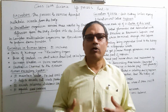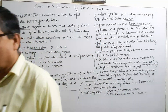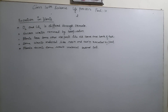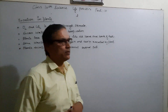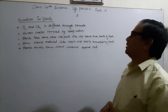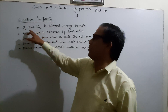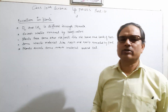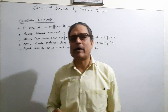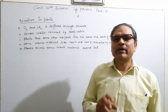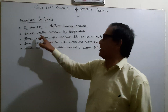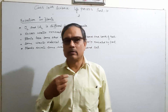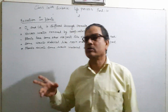Now we will discuss excretion in plants and what substances are excreted by them. First, plants excrete oxygen and carbon dioxide through the exchange of gases. CO2 is also released by the process of respiration, which also takes place in plants. Excess water not useful for the plant is removed by the process of transpiration.